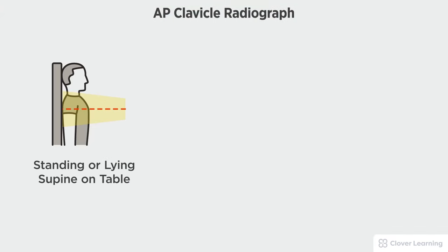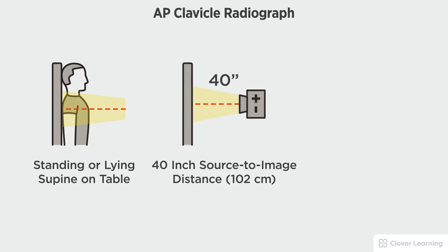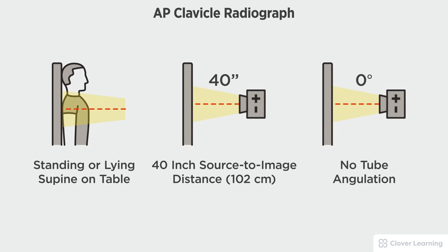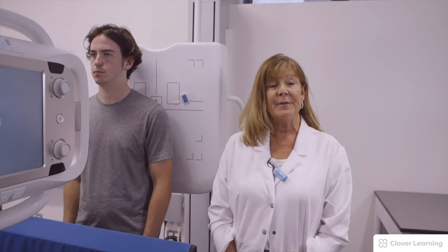In this view we will be demonstrating the AP clavicle. The AP clavicle should be performed with the patient standing at the upright bucky or lying supine on the radiographic table with a 40-inch source to image distance and no tube angulation. For the first view, the AP, we are going to use a 40-inch SID.